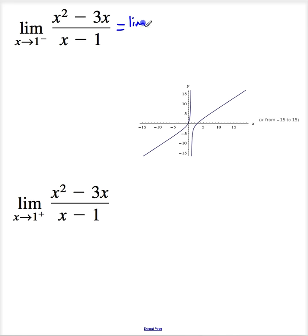So, we're going to look at the limit as x approaches 1 from the left. And when I factor this, it's going to be x, x minus 3 divided by x minus 1. Now, this isn't going to simplify.